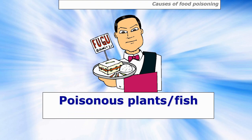Another cause is poisonous plants or fish. Fugu, the puffer fish, is a delicacy in Japanese restaurants, but if you're not licensed to prepare it, you can poison your customer, because the skin and intestines contain a very potent neurotoxin that can kill within two minutes. You must be licensed to prepare it.